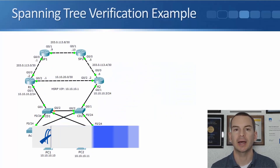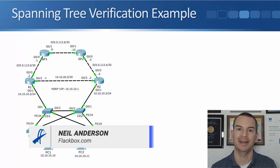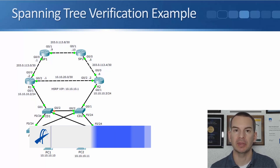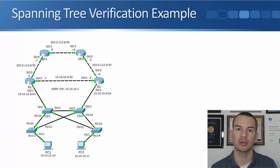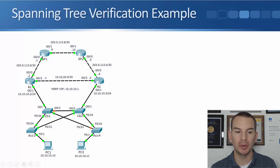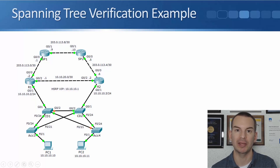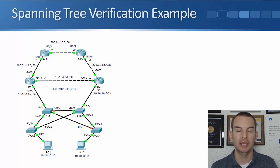In this lecture you'll learn how to verify the spanning tree protocol. I'm using the same network topology that I've been using throughout the rest of the section, with the layer 3 part at the top with routers R1 and R2 going northbound, and the layer 2 part with core distribution switches CD1 and CD2, and access layer switches Access 3 and Access 4. What we want to do here is map out how the spanning tree has been configured.